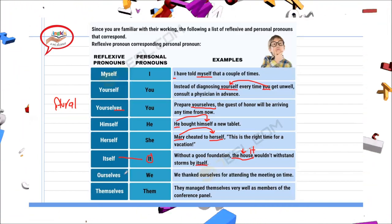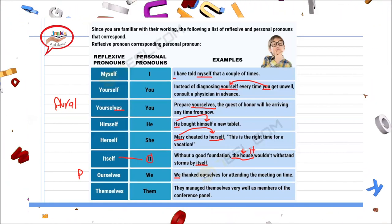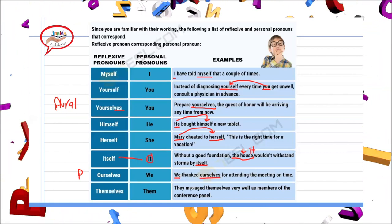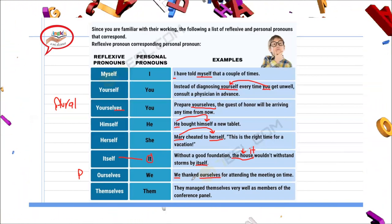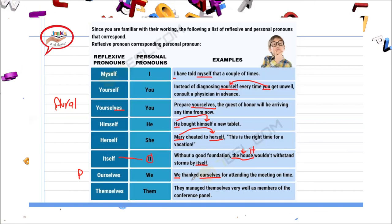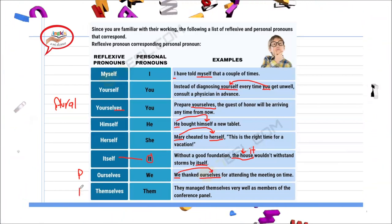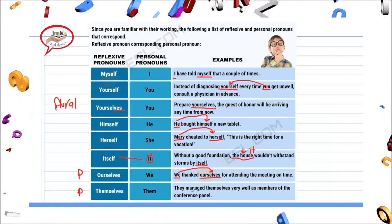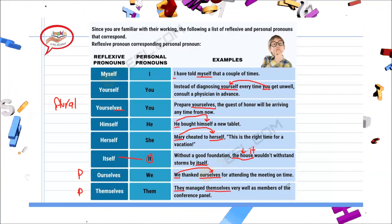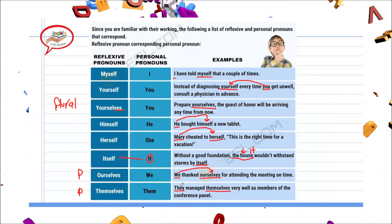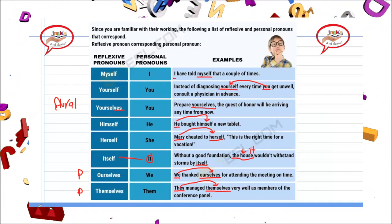Ahora vamos con ourselves, que es plural: 'We thanked ourselves for attending the meeting on time.' Siempre que tengamos we, vamos a utilizar ourselves. Y la última — themselves, también plural: 'They managed themselves very well as members of the conference panel.' Cada vez que tenemos they, vamos a utilizar themselves. Espero que con estos ejemplos te haya quedado un poquito más claro.